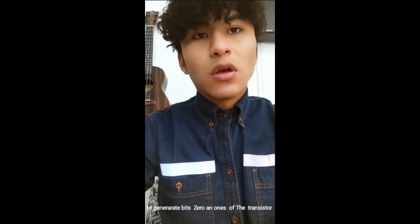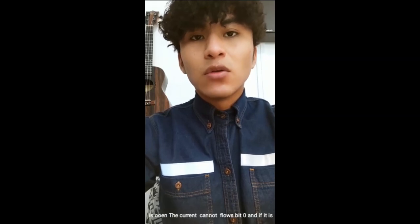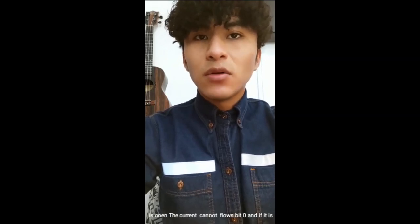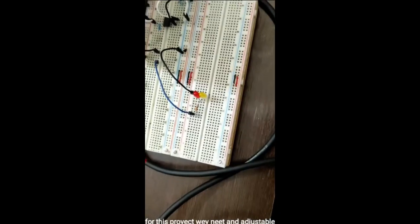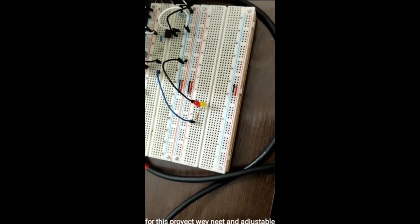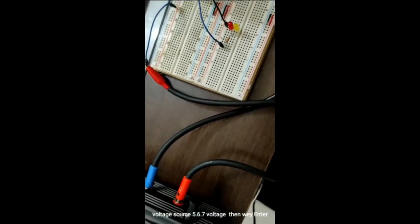Each zero and one bit in the transistor - they open the current, current can flow. Bit zero closes the current flow. For this project, we need to adjust the voltage source to 5, 6, or 7 volts.